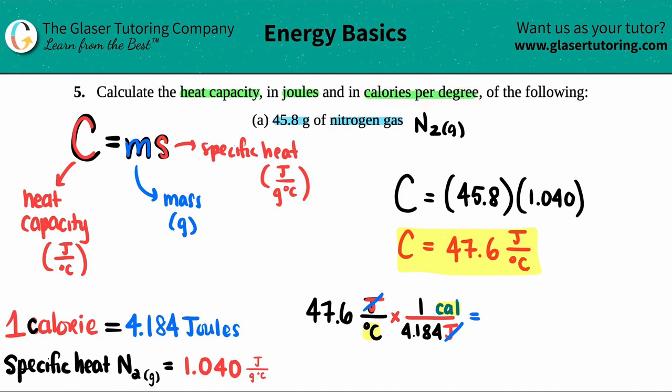So let's do the math. The 4.184 is on the bottom. So that's division. So 47.6 divided by 4.184. Keeping with the three sig figs, I get roughly 11.4. And that's now calorie per degree Celsius. And this is specific for nitrogen gas. So here are your two heat capacities, 47.6 joules per degree Celsius, and then 11.4 calories per degree Celsius.